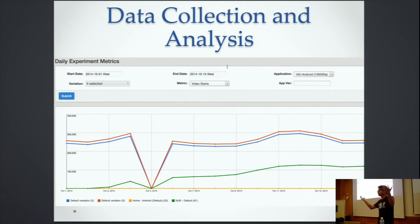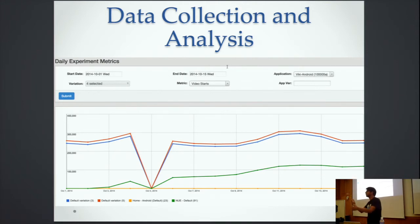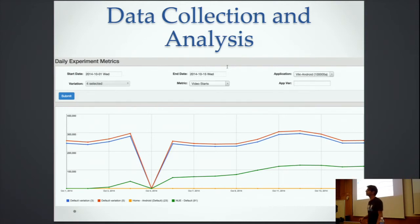API calls can fail for network or other reasons. If the call fails, we use the base version. If the call goes through, the client picks up the JSON, converts it into a data structure — in Java you can parse it into a data structure with the right error handling. If there's an error, you serve the base variation; otherwise, you serve the chosen variation. The implementation details vary since there are multiple clients implementing it.